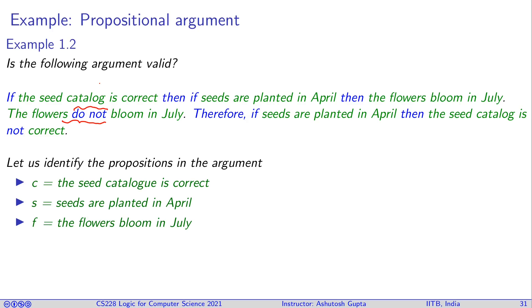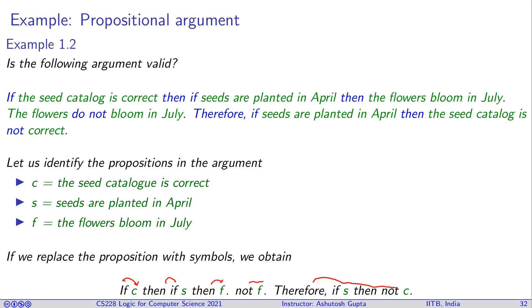Once you write it down this way and replace all the propositions by their symbols, you will end up writing something like this: if c then if s then f, not f, therefore if s then not c.